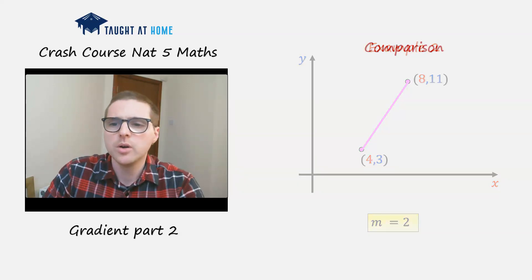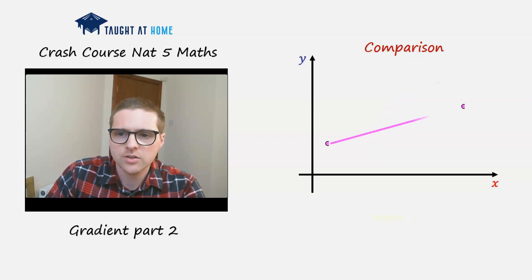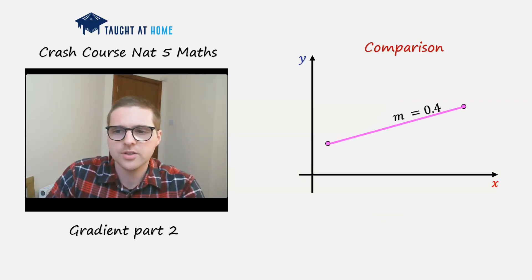Now let's compare those two. We have the gradient of 0.4 or 2 over 5, and the gradient of 2. We can clearly see that the gradient with the higher number is steeper.